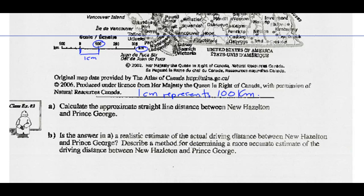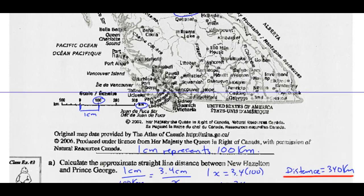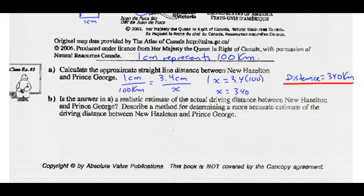Part A: calculate the approximate straight-line distance between New Hazleton and Prince George. Find those two places on the map and measure. I got about 3.4 centimeters. Using our line graph scale — 1 centimeter over 100 kilometers equals 3.4 centimeters over x — cross-multiplying gives 1 times x equals 3.4 times 100, so x equals 340 kilometers. The straight-line distance between New Hazleton and Prince George is 340 kilometers.